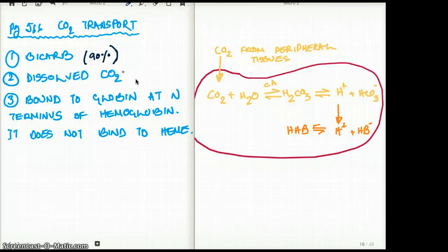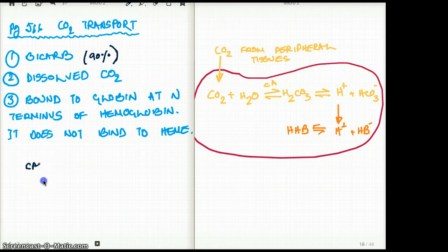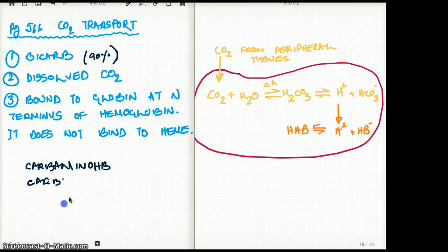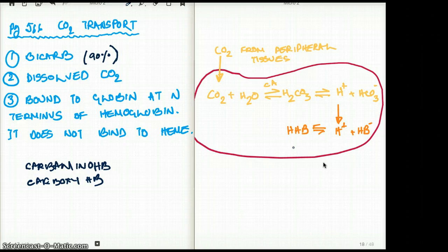When carbon dioxide is bound to hemoglobin, we call it carbaminohemoglobin — car-ba-mi-no-hemoglobin. Do you remember what it's called when carbon monoxide binds to our hemoglobin? It's called carboxyhemoglobin. So don't confuse the two: carbaminohemoglobin is bound to carbon dioxide, and carboxyhemoglobin is bound to carbon monoxide.